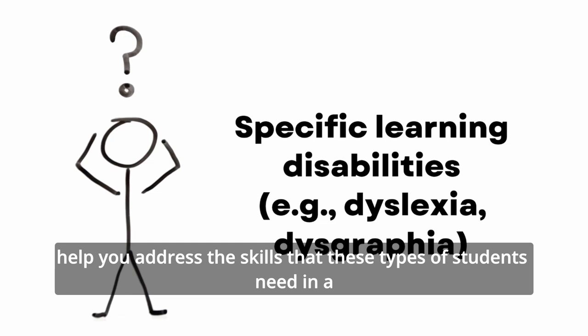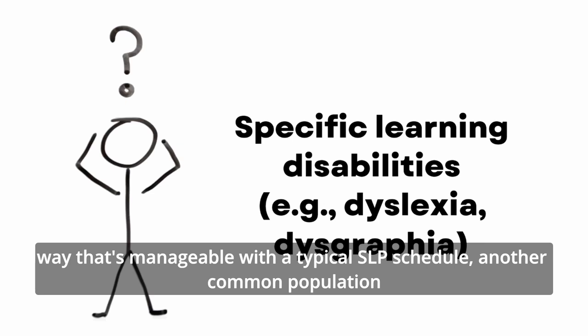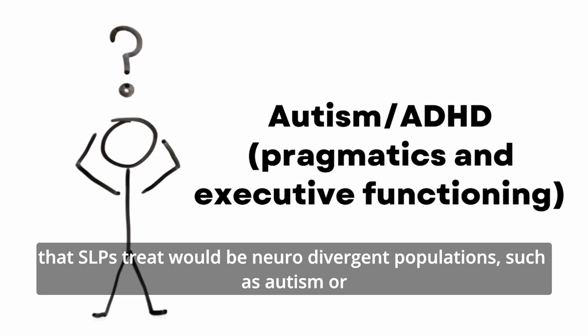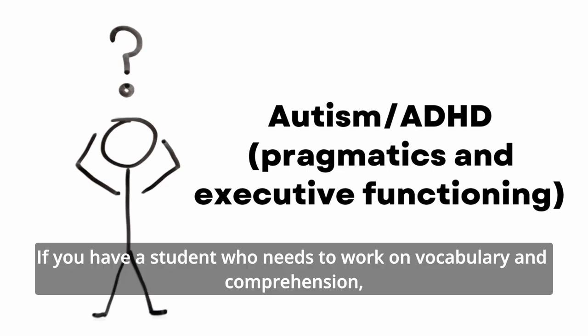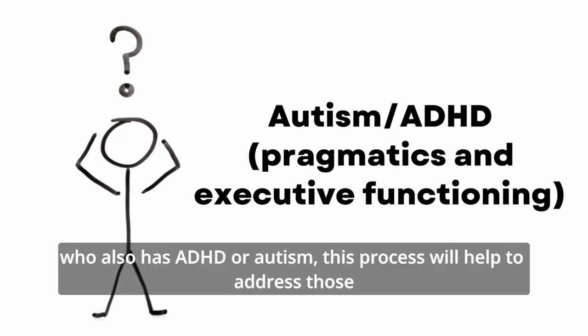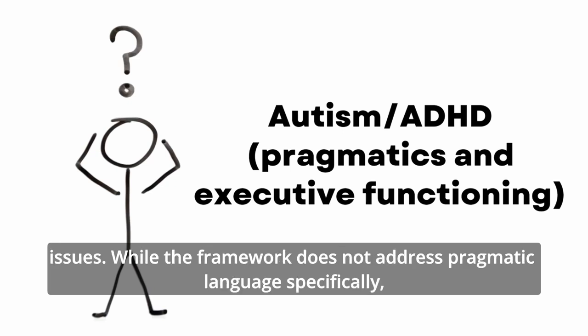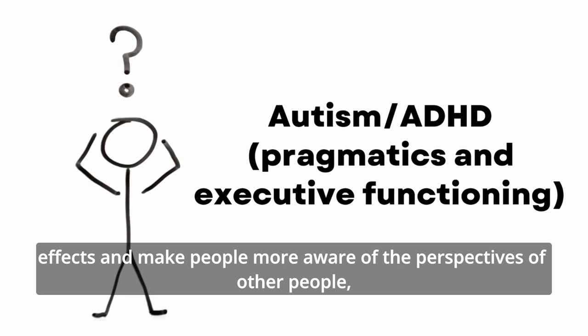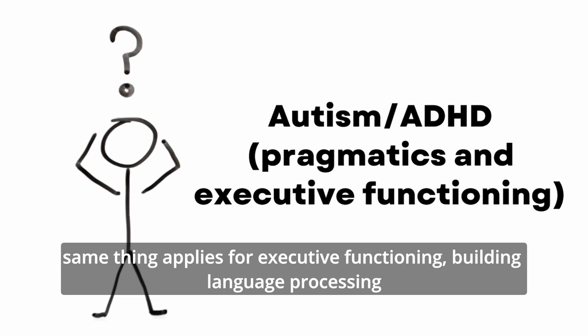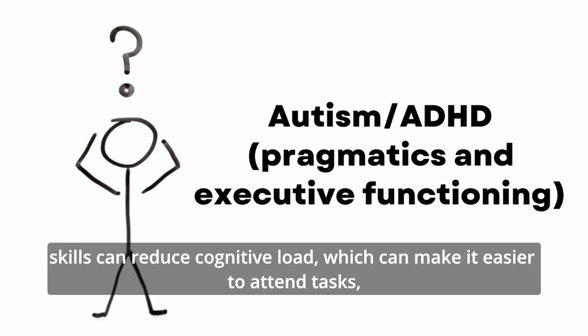The Essential 5 framework will help you address the skills these students need in a way that's manageable with a typical SLP schedule. Another common population is neurodivergent students, such as those with autism or ADHD — conditions that commonly impact pragmatics and executive functioning. If you have a student who needs to work on vocabulary and comprehension and also has ADHD or autism, this process will help address those issues. While the framework does not address pragmatic language specifically, becoming more aware of how you use language can have carryover effects and make people more aware of others' perspectives.